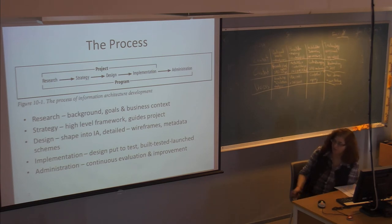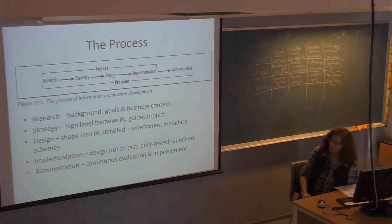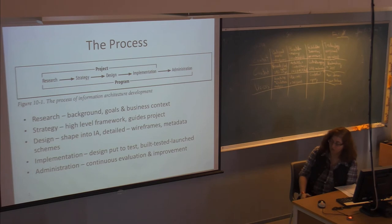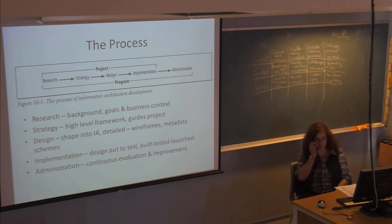Implementation is putting the design into use and testing it, possibly launching different areas in stages — testing one area, launching it, then testing the next. As you get feedback from user testing, you might redesign certain aspects. Administration is the continuous evaluation of how the site is being used and how it's performing, identifying ways to improve it. This book mostly covers the first three stages — research, strategy, and design — which is also what you'll be doing in assignments 2 and 3.